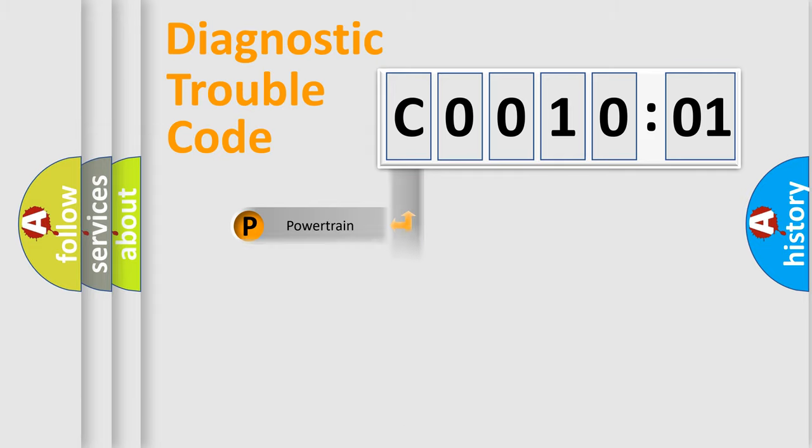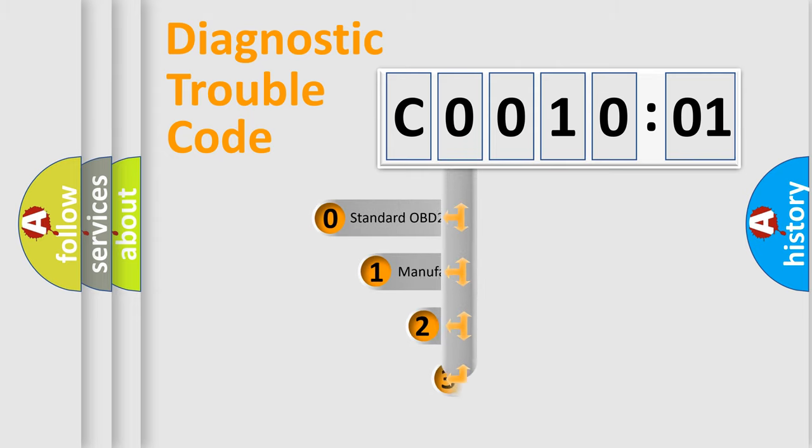Powertrain, Body, Chassis, Network. This distribution is defined in the first character code.